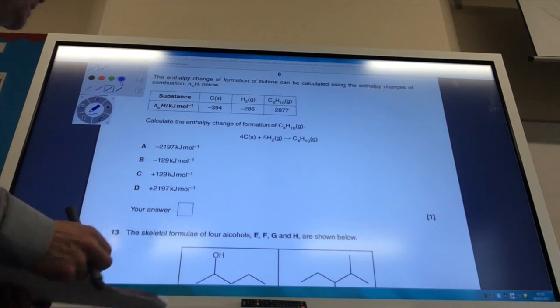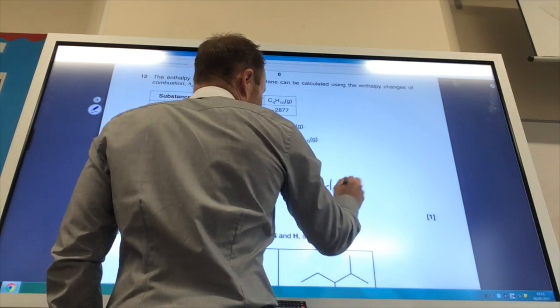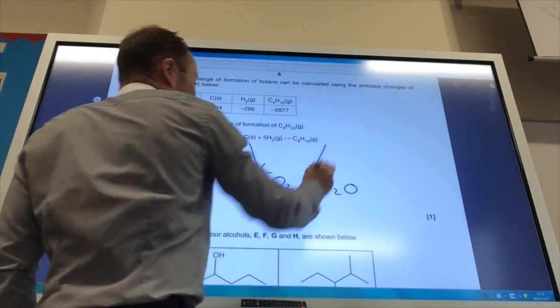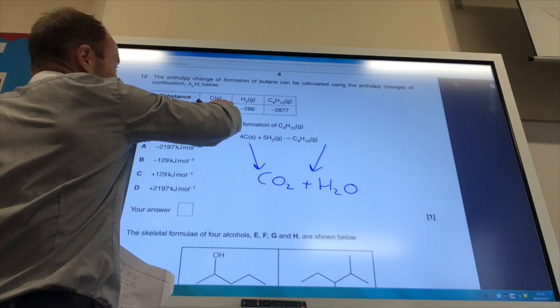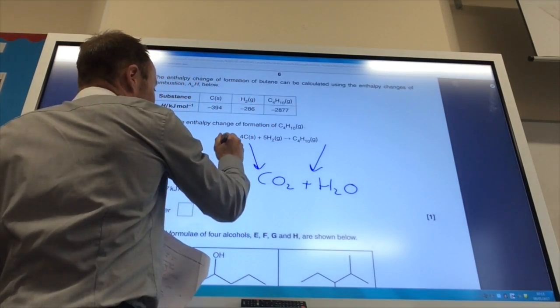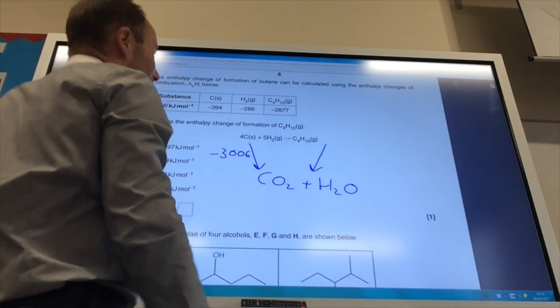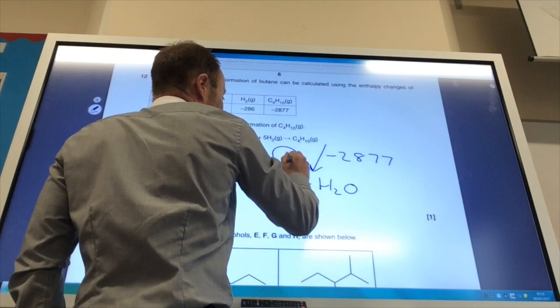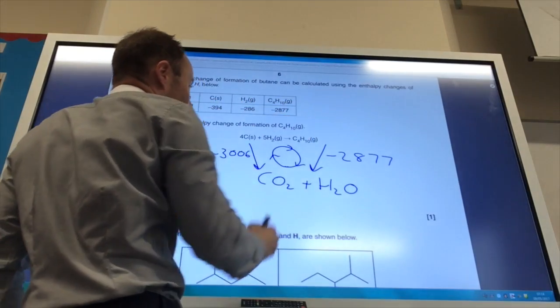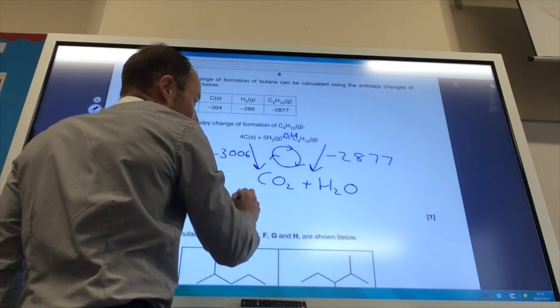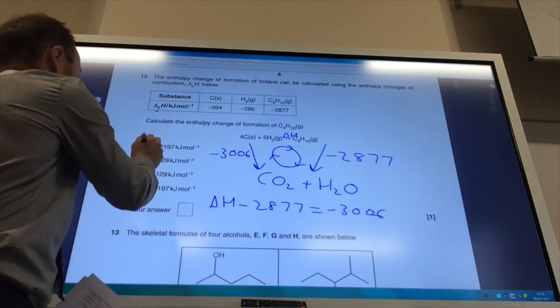I've now got a Hess cycle to do. Notice they've given me combustion, an enthalpy of combustion here. Down here is going to be my combustion products, which is CO2 and H2O, and my arrows go down. The combustion of carbon and hydrogen they've given me, so it's going to be 4 times minus 394 and 5 times minus 286. If you do that, you get minus 3006 if you add them all up together. For butane, they told me it's minus 2877. I've got clockwise arrows going down there and these arrows are going clockwise, that arrow is going anti-clockwise. So I can fill my equation: delta H minus 2877 equals minus 3006. You rearrange that equation and you get the answer to be B.